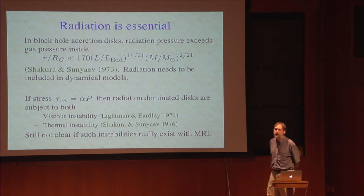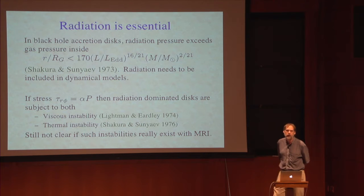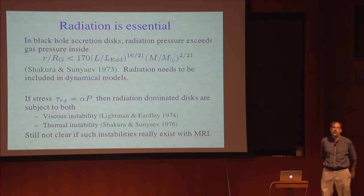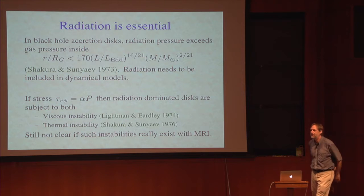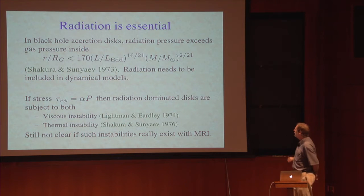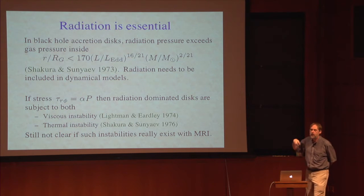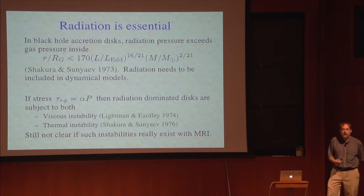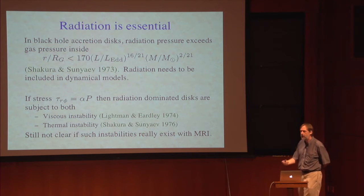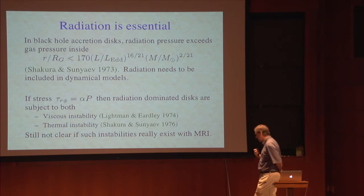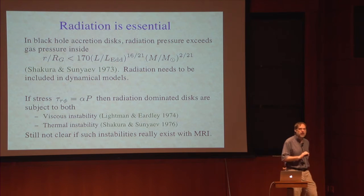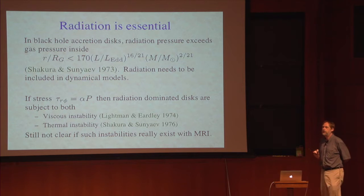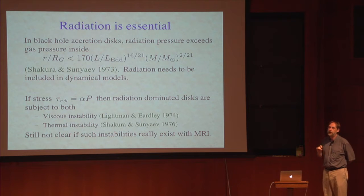Even if you're accreting at a tenth of Eddington or a fraction of that, you're still going to be radiation dominated in the inner regions of the accretion flow. So radiation is at least as important — probably more so — as magnetic fields in the inner parts of the flow, and we need to include it. It's incredibly difficult to solve the radiation hydro equations, so while we know it's important, adding it self-consistently has been very, very difficult.